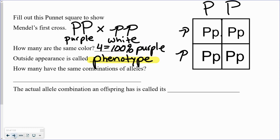So a new word coming up here, the outside appearance is called phenotype. So phenotype would be purple or white, round seeds or wrinkled, dangling earlobes or attached earlobes.